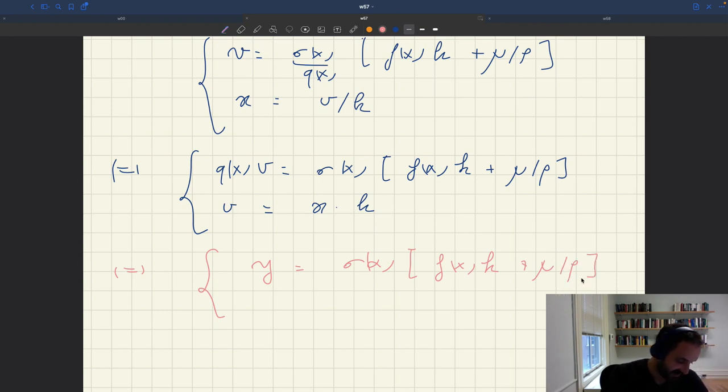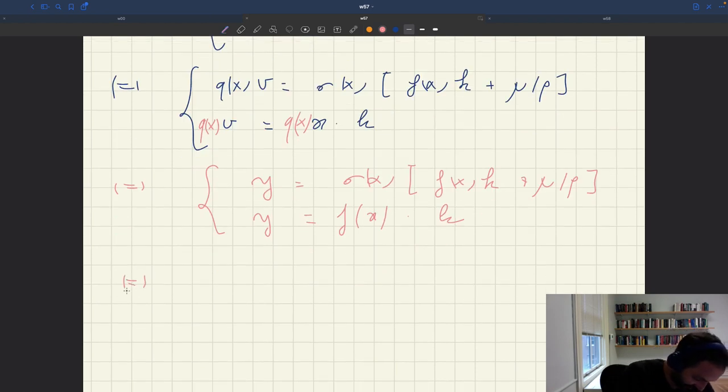Here we recognize our standard solution concept. This is just saying that Y is YD. This you recognize is Y equals sigma X times YS(X) plus mu over P. And this you recognize is Y equals YS(X).